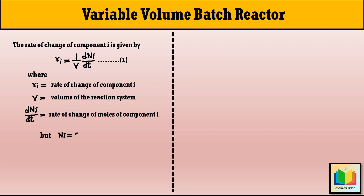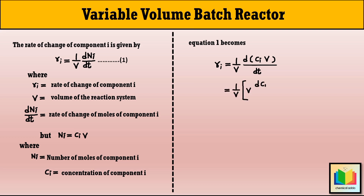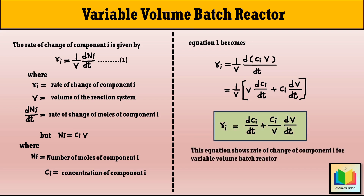Since NI = CI × V, where NI is the number of moles of component I and CI is the concentration of component I, substituting into equation 1 gives: RI = (1/V) × d(CI·V)/dt. Applying the product rule of differentiation: RI = (1/V) × [V × (dCI/dt) + CI × (dV/dt)]. After solving, we get: RI = dCI/dt + (CI/V) × (dV/dt). This is the equation for the rate of change of component I for a variable volume batch reactor in terms of concentration.